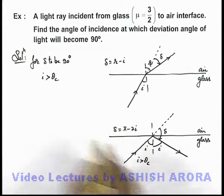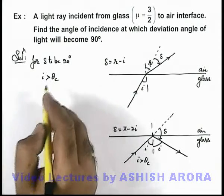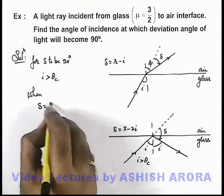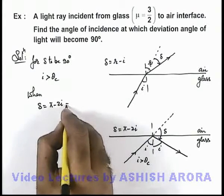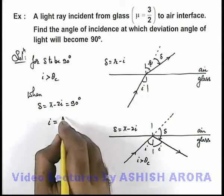So in this situation, we already written for delta to be 90 degrees, i must be more than θ_c. When the value of deviation angle is π minus 2i, if this is to be 90 degrees, here the value of i can be written as...